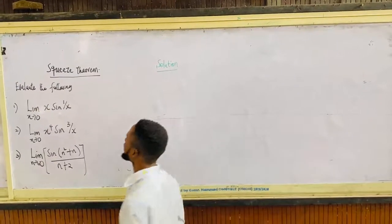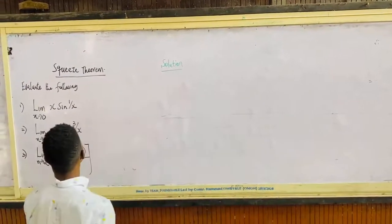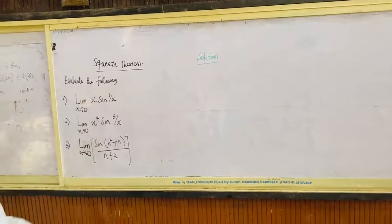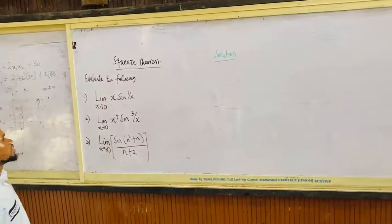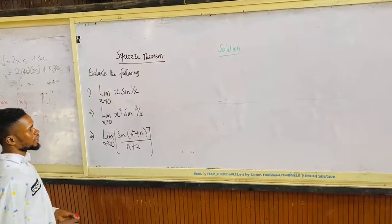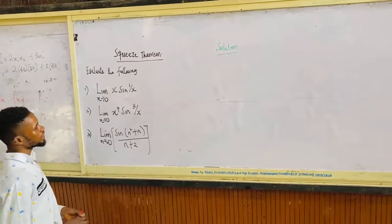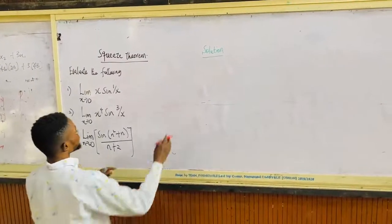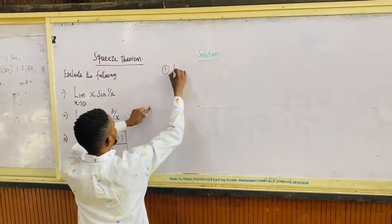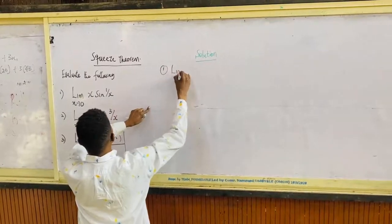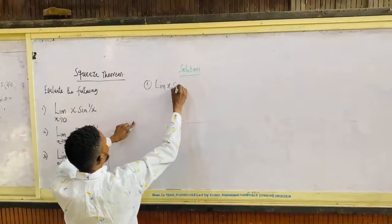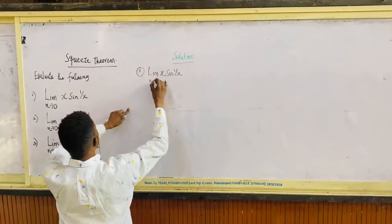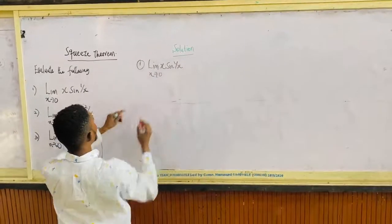Now, what do we have here? Squeeze theorem. Now, evaluate the following: the limit of x sine 1 over x at which x tends to 0. Limit x sine 1 over x, x tends to 0.